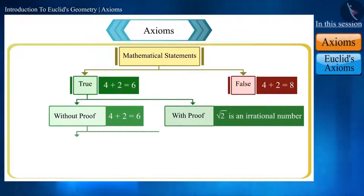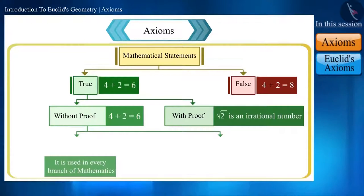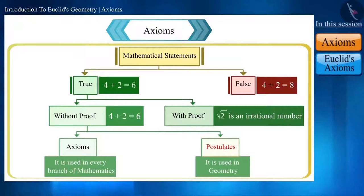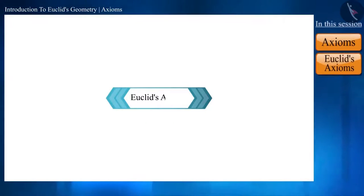And it also has two classes. First, which is used everywhere or generally in every branch of mathematics. It is called axioms. And the second, which is particularly related to geometry. That is called postulates. Friends, we will discuss the postulates in detail in an upcoming video. Here, we will look at some of the axioms given by Euclid.